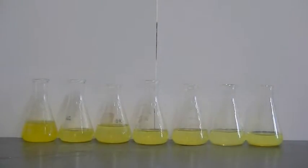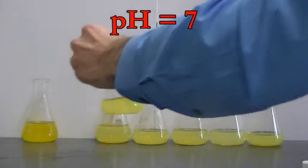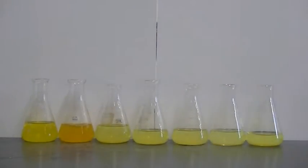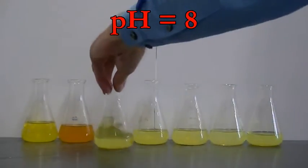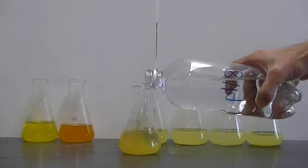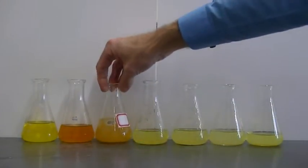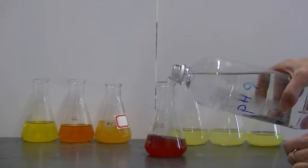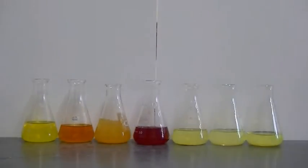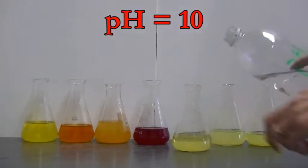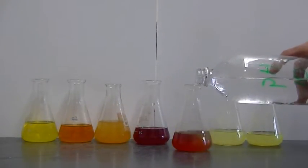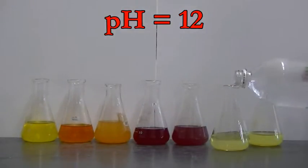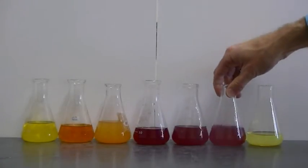Into the second flask, I'm going to pour some buffer at pH 7. To the next flask, I'll pour some buffer at pH 8. Next pH 9. pH 10. pH 12. And finally, pH 14.